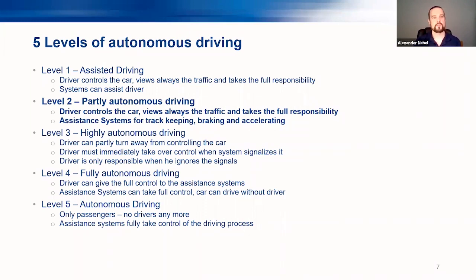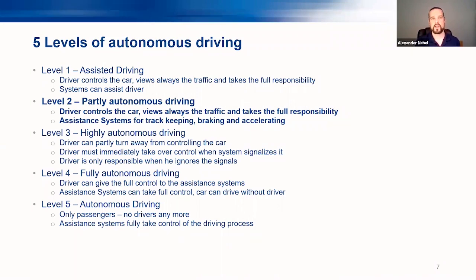Level three is highly autonomous driving, where the car can take control for longer periods — maybe on a highway — and the driver is only responsible when the system signals them. Level four means the driver can give full control to the car and, for example, write emails. Level five means there is no possibility for the driver to take control at all — no steering wheel, no intervention possible. This is where we want to go. But what does it take to get from level two to level five?